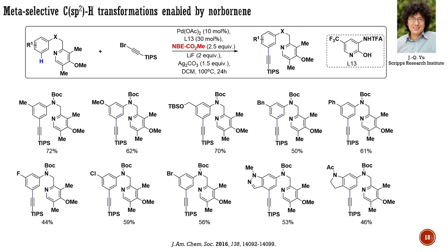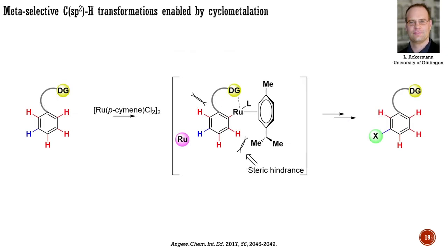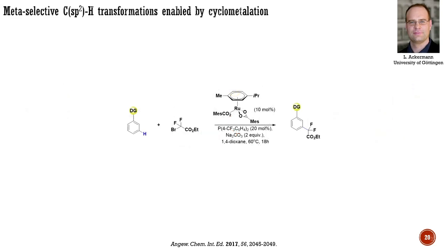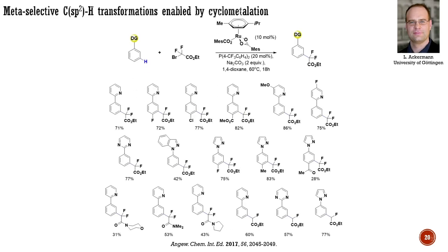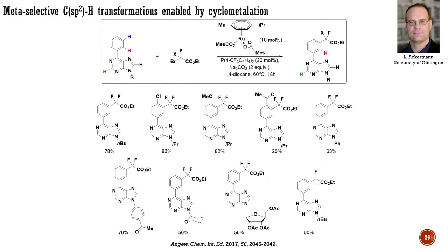For meta-CH activation enabled by cyclometallation, let me share the work conducted by the group of Ackermann from the University of Göttingen. In their 2017 publication, they explored ruthenium-catalyzed difluoromethylation of various arenes. The study revealed that difluoromethylation can be achieved using a variety of directing groups. The most promising results were observed with pyridines, pyrimidines, indazole, and pyrazoles. Interestingly, applying the same strategy made it possible to introduce monofluoroalkyl groups. Furthermore, they successfully extended their strategy to purine derivatives. Difluoromethylation proved effective for purines with a protected sugar. This concludes the strategies for meta-CH functionalization.